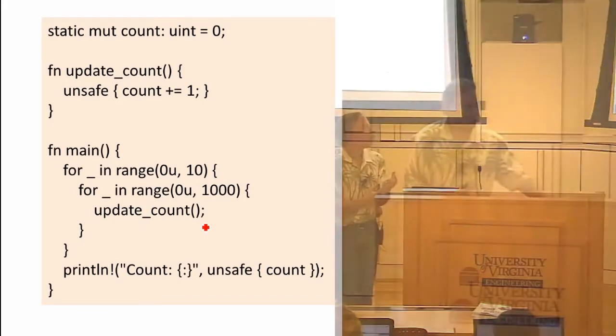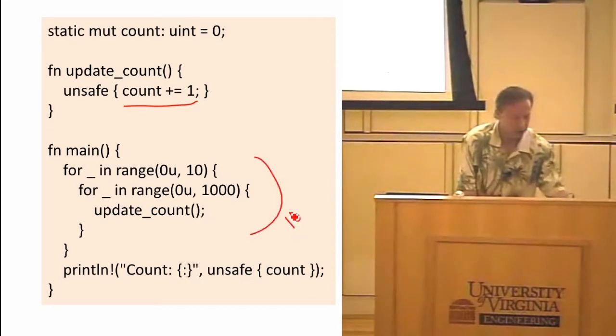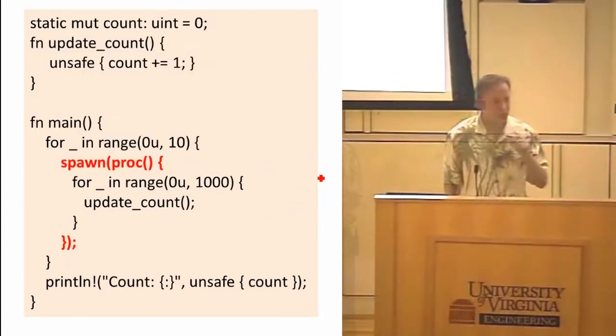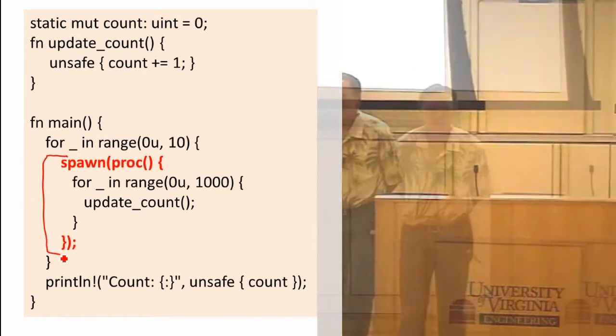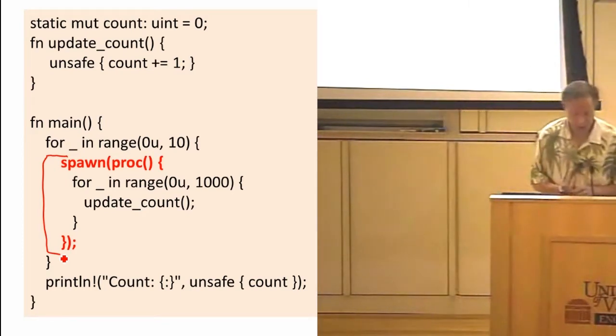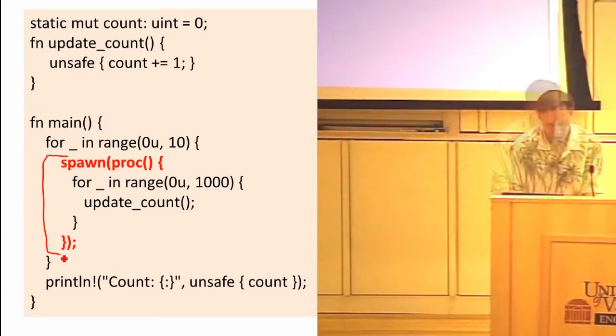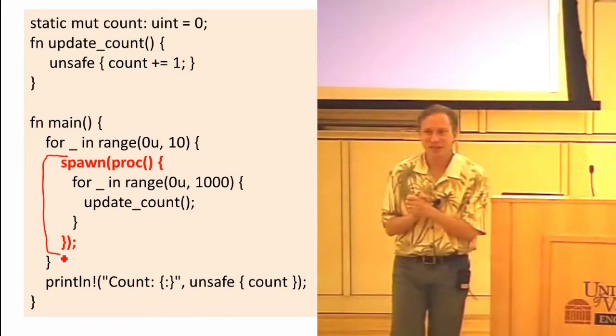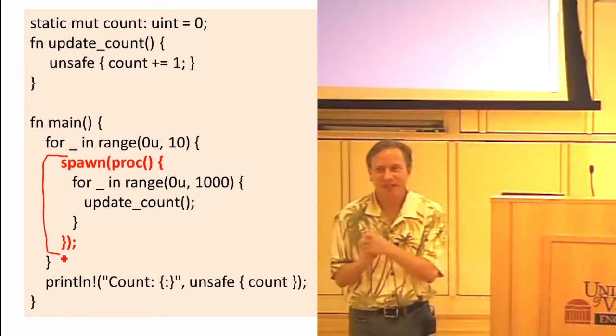So even though it's unsafe, it actually seems like it's always going to be correct here. And it's correct because we only have one thread running. Everything's going on in one thread. We know the value of count is always going to increase by one every time we call update. And we're calling update 10 times a thousand times. We need it on safes there, but our code is actually always going to behave the way we expect. Now let's add a spawn.